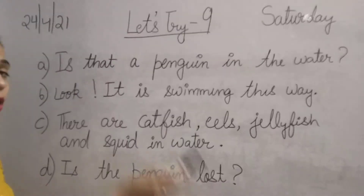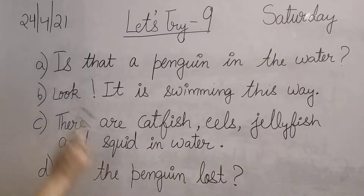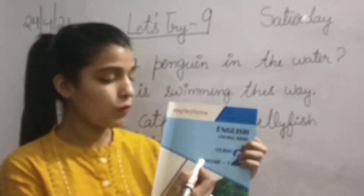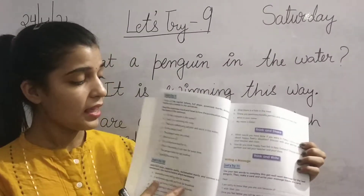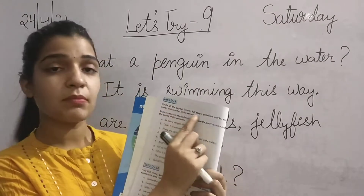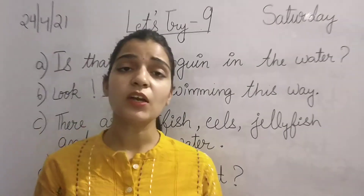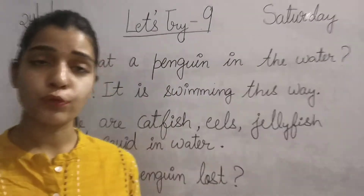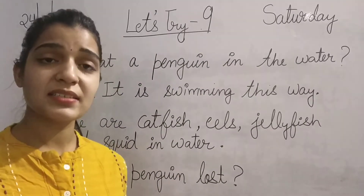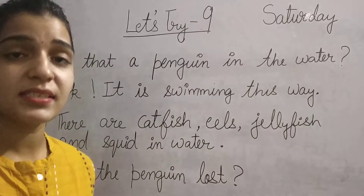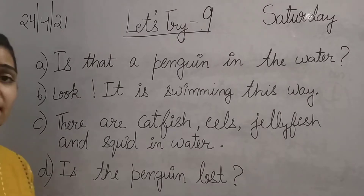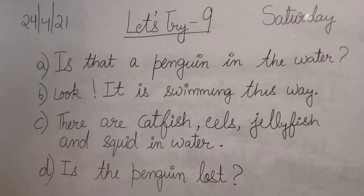We will use all these punctuation marks to do this exercise. This is our English book, volume 1, at page number 10. This is Let's Try and question number 1 is: circle all the capital letters, full stop, question marks, exclamation marks and commas in the sentences. You have to circle all the punctuation marks.